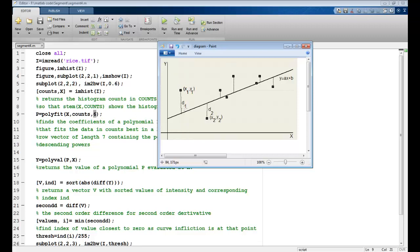So from the actual value, we draw perpendicular to this curve, find out the distance and square these distances for each and every count value and we try to minimize that distance.